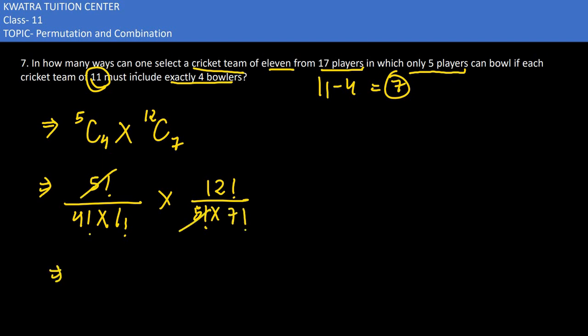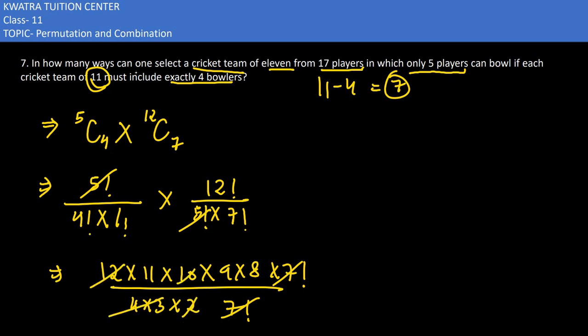Now we expand this. 7 factorial is 7 factorial, 4 factorial is 4 × 3 × 2, then 12 × 11 × 10 and so on. After simplification, the value you will get is 3960.